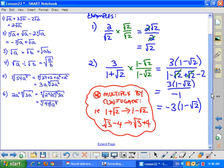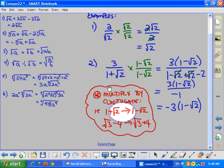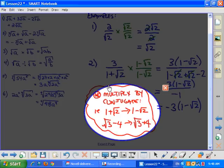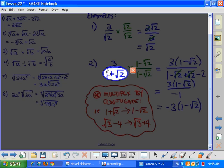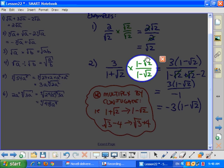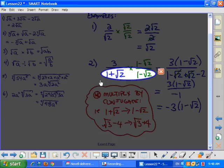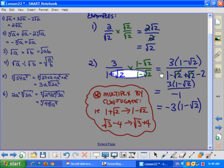Now, when you have a question that looks like this, 3 over 1 plus root 2, so the denominator is an expression, we have to multiply by what we call the conjugate. Conjugate is the exact same expression except opposite signs. So, 1 plus root 2, the conjugate would be 1 minus root 2. We need to take the conjugate of that denominator and multiply top and bottom by the 1 minus root 2. We multiply by the conjugate because if you look at the denominators now, this is a difference of squares. If it's a difference of squares, the middle term will fall out, and that means we have no radical.